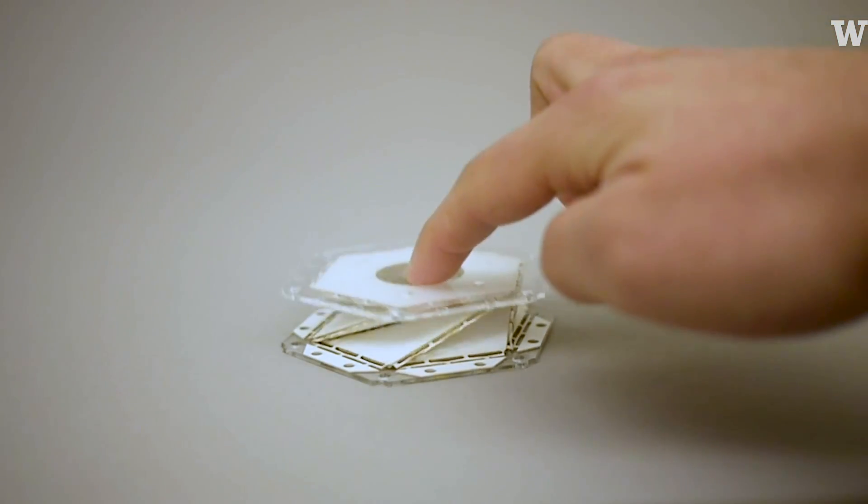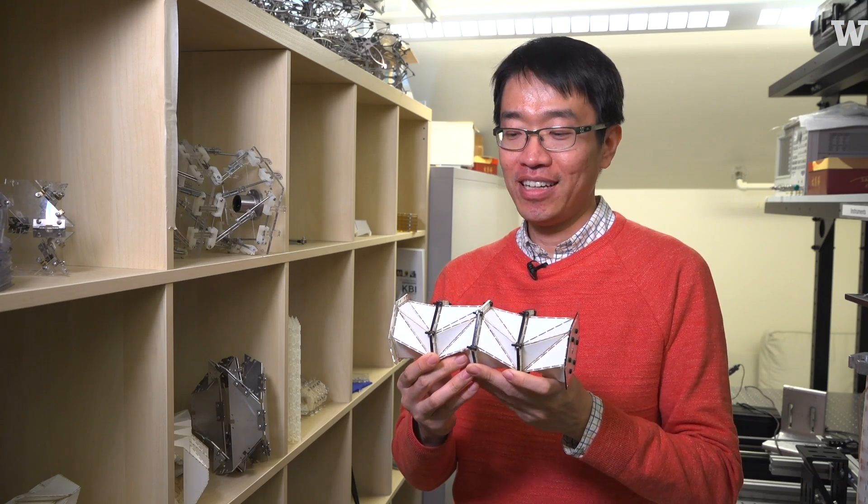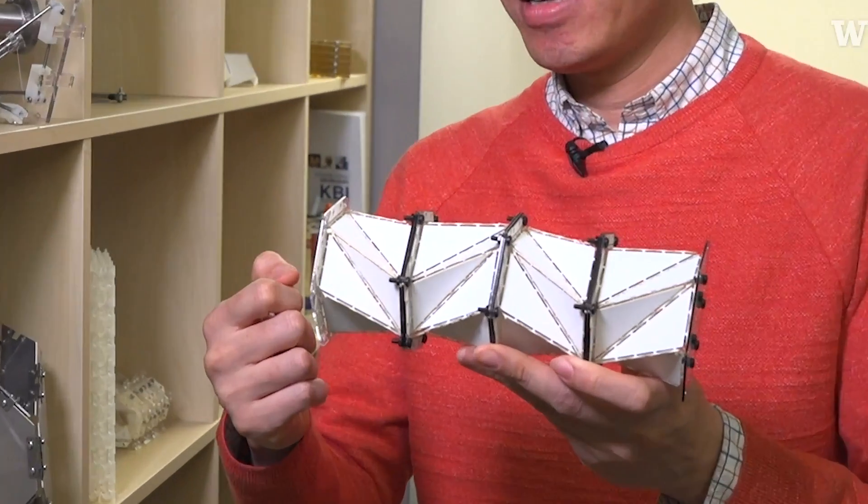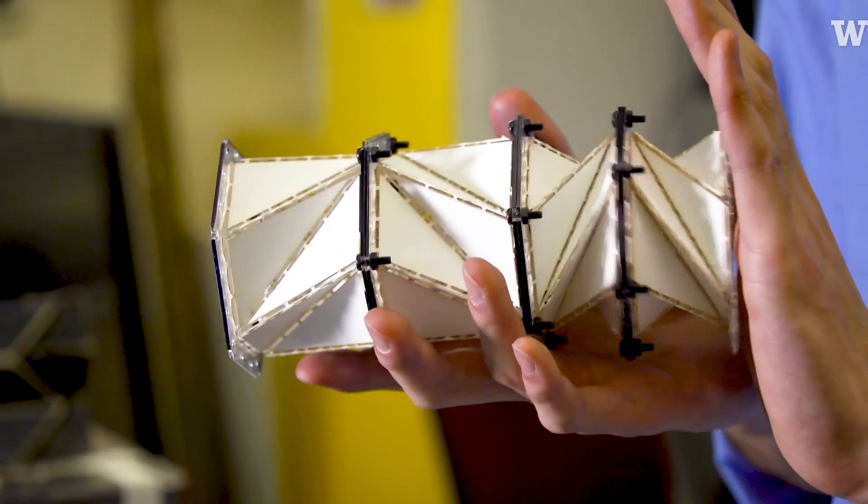So imagine that you are going to use this origami structure as impact protection layer, and you are applying, let's say, hammer impact on one side. The compression wave will eventually change into a decompression wave while it's moving through this chain.